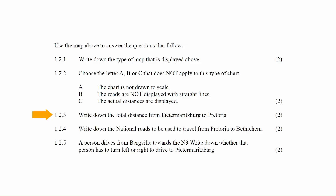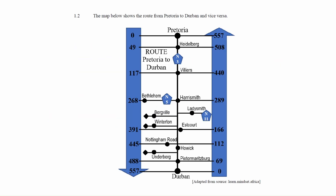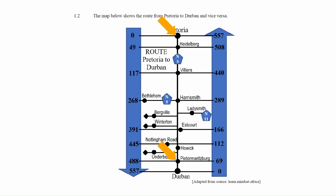In question 1.2.3 you have to write down the total distance from Pietermaritzburg to Pretoria. Looking closely at the chart, the numbers on the side indicate the distance along the N3. From Pietermaritzburg to Pretoria, the total distance indicated is 488 kilometers.